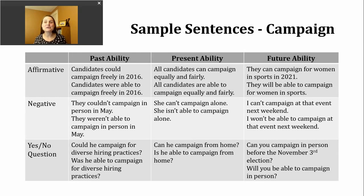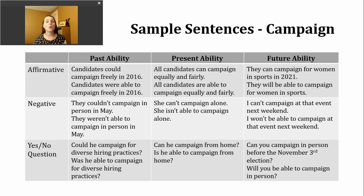Let's continue using our verb campaign, and I thought it might be interesting to talk about our verb as it connects to ability. Generally we use modals to talk about what we're able to do, but that's not the only way. We'll look at sentences that express past ability, present ability, and future ability. For both, I'm going to give you two example sentences in the affirmative, negative, and with yes or no questions, because there are two ways we can express this: we can use a modal and the base verb, or we can use be able to and a base verb.